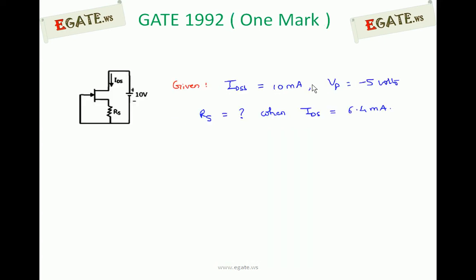We see the details now. This is a diagram given. Information given related to the problem is IDSS, drain to source saturation current, 10mA, pinch off voltage minus 5V, and IDS is 6.4mA. We need to calculate the value of RS.